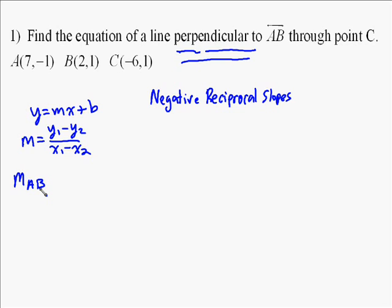So let's find the slope of AB to start. So we subtract our y's, and we're going to end up with negative 1 minus 1 over 7 minus 2, which is going to give us negative 2 over 5. So our slope of AB is negative 2 fifths.